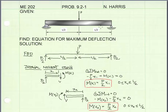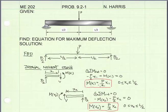Now looking at the right half of the beam, I need to develop an equation for the moment there. I'm going to define a new axis x2 that starts on the right side of the member and goes towards the left. I'll cut the beam somewhere between the right end and the point load at a distance x2, put on the external load P over 2 and the internal shear force and moment. Summing moments about the cut equal to zero, the internal moment in terms of x2 equals P over 2 times x2, valid for x2 from 0 to L over 2. So now I've got two equations for moment — one for each half of the beam.